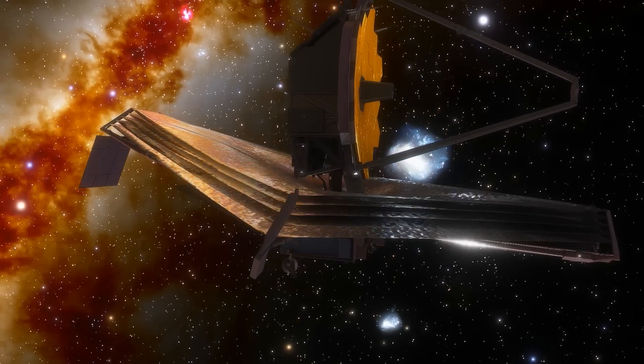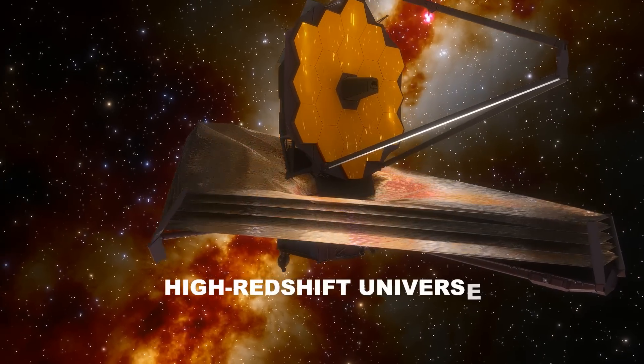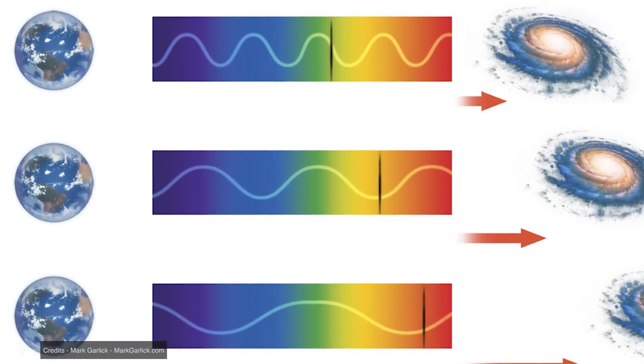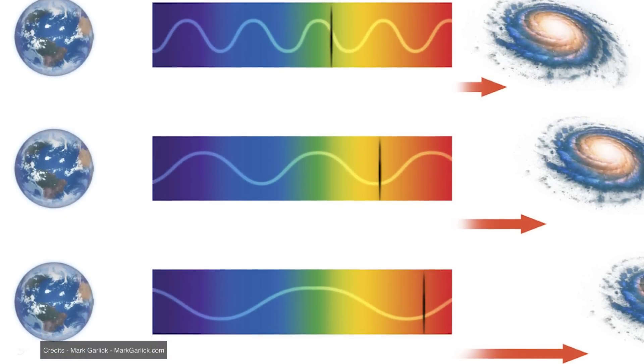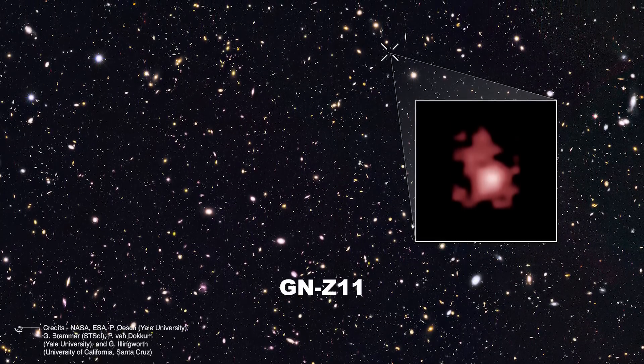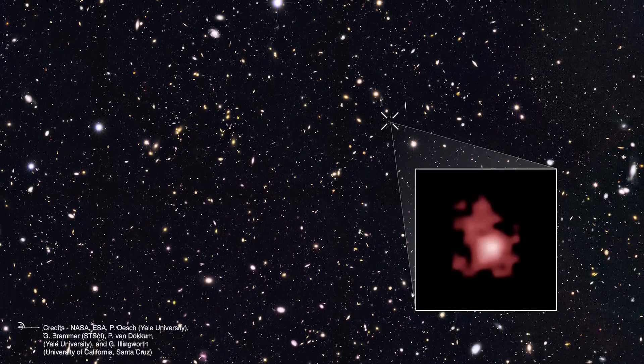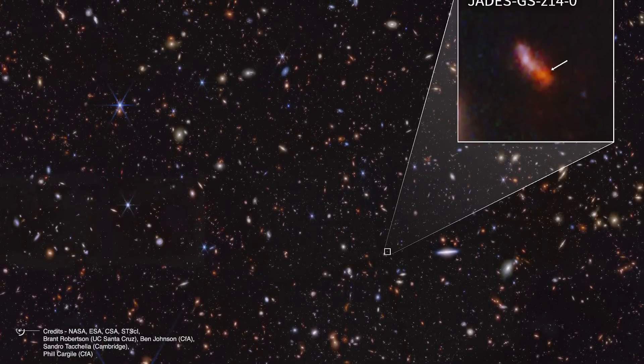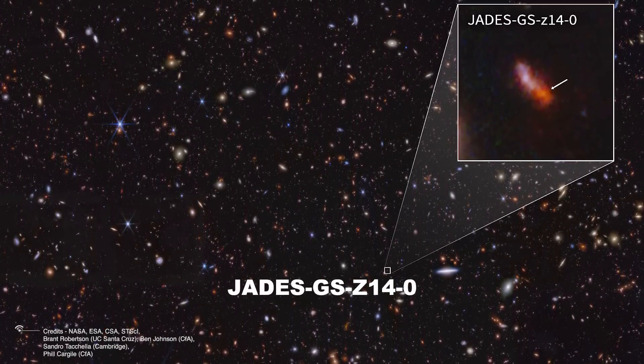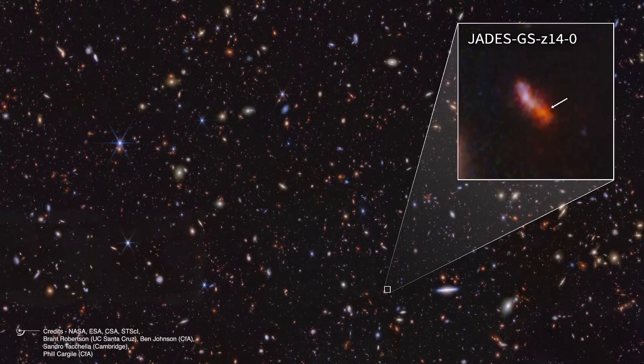The James Webb Telescope was designed to uncover the secrets of the distant universe, also known as the High Redshift Universe. While the Hubble Telescope can only observe up to a redshift of 11 corresponding to the distance of the farthest galaxy it detected, the James Webb Telescope can see much farther, up to a redshift of 20. This has led to discovery of a new record holder, JADES-GS-z14-0, the earliest and most distant galaxy ever recorded by humanity.